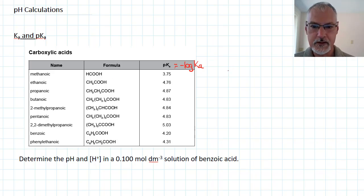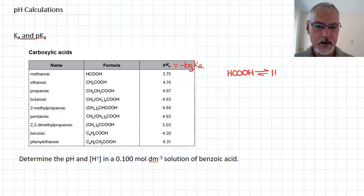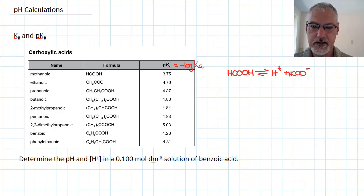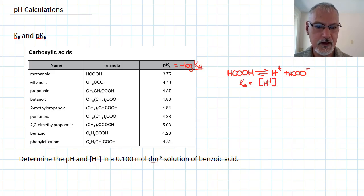For the first case, methanoic acid, we can view that as dissociating and forming hydrogen ions and its conjugate base. This has an equilibrium constant associated with it, called the Ka value. So the Ka for this particular reaction would be the concentration of H+ times the concentration of its conjugate base over the original concentration of the acid.